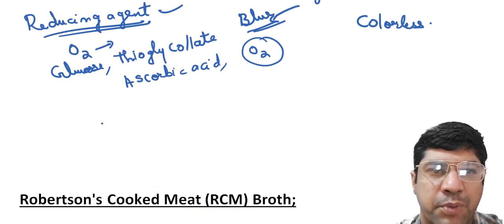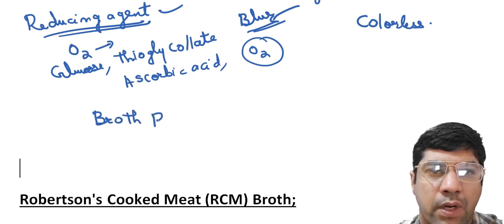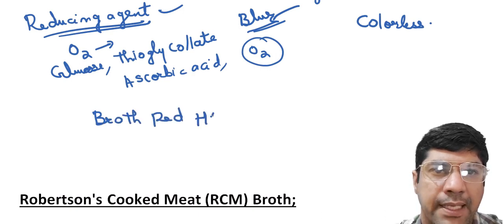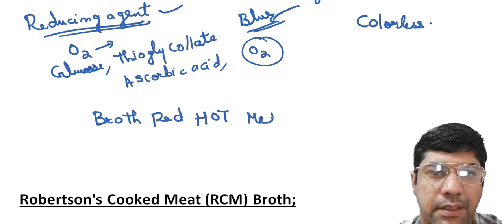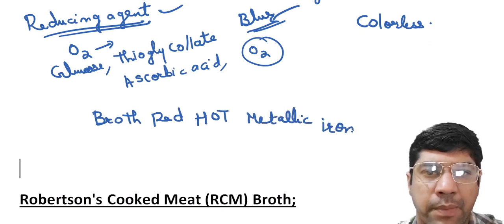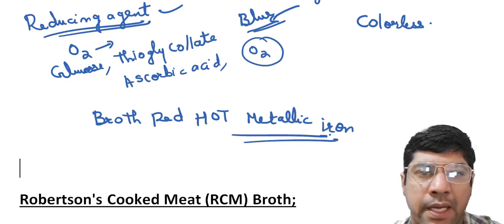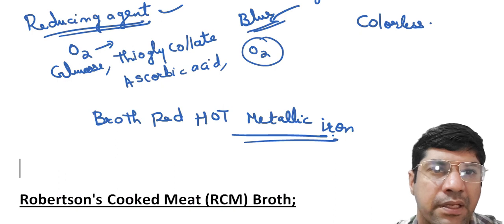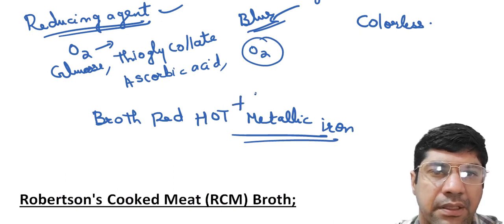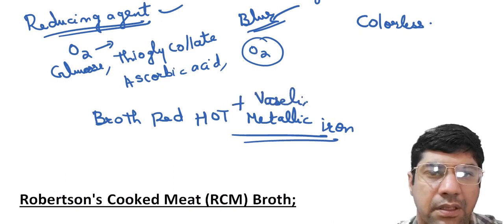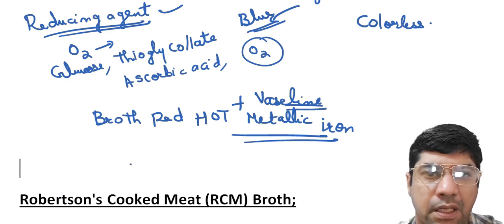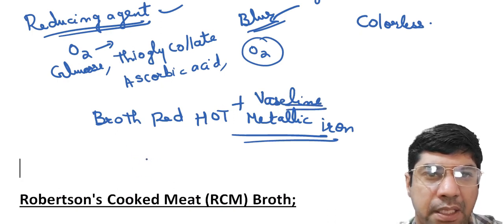Another method is broth with red hot metallic iron. You can make a liquid medium for anaerobic bacteria by adding red hot iron and covering it with Vaseline. Another medium is thioglycolate broth with hemin and vitamin K.